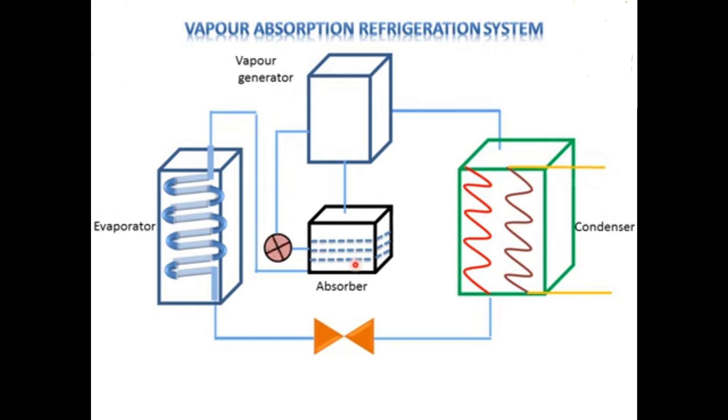Now this high temperature and pressure liquid is sent to the expansion valve where it gets chilled. Now this chilled refrigerant in liquid form is again sent to the evaporator.